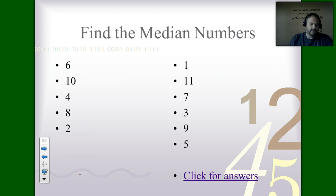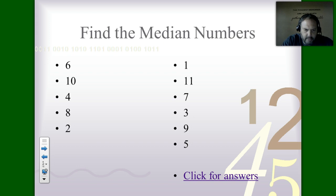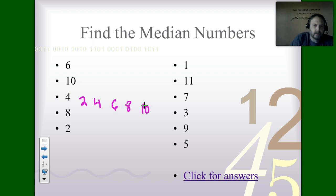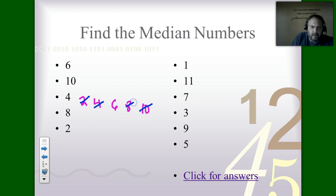Let me click the draw button to work through this. In the first set we have 2, 4, 6, 8, 10 — all lined up in order. Cross off the outside numbers: 2 and 10 are gone, then 4 and 8 are gone, and the answer in the middle is 6.